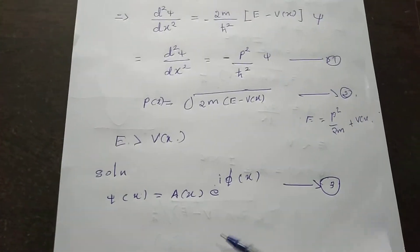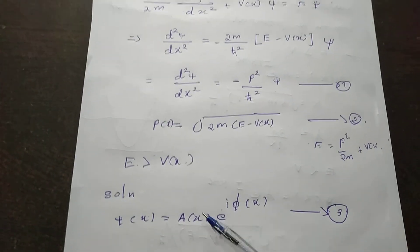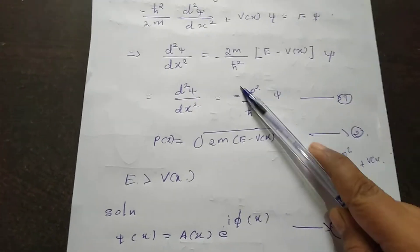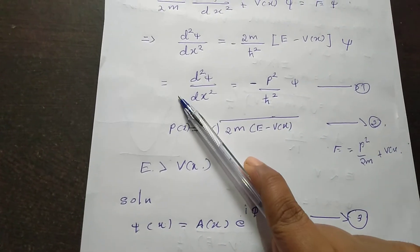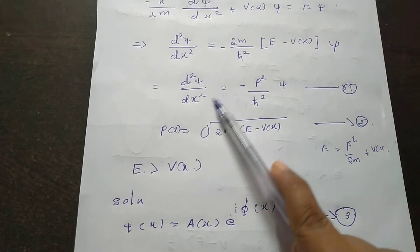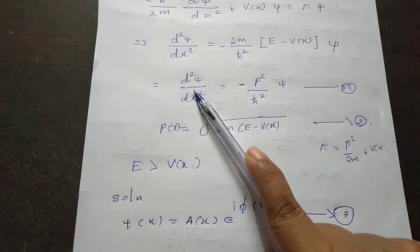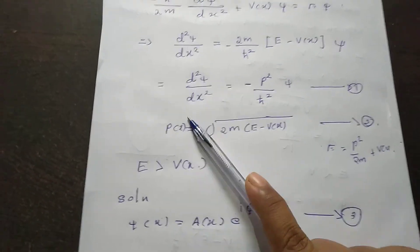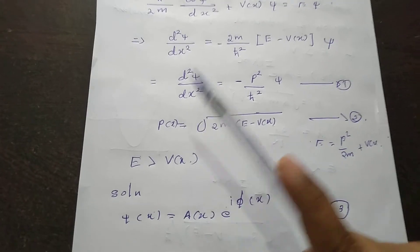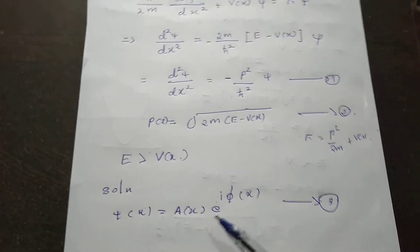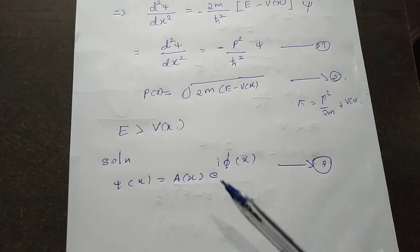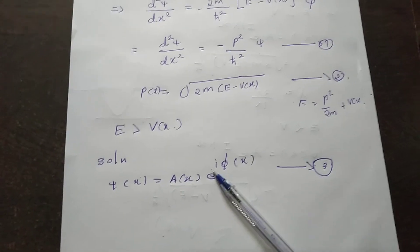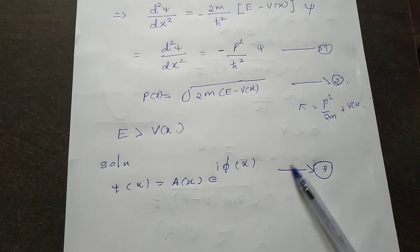Now we substitute psi(x) from equation number 3 into equation number 1. We need to compute the second derivative d squared psi by dx squared, so we first take the derivative of equation number 3.